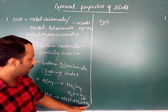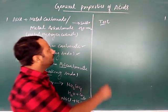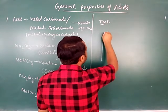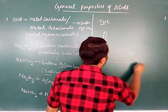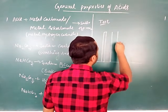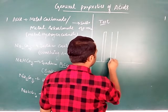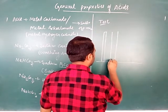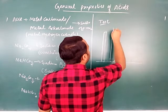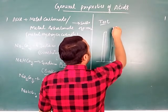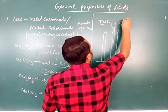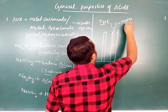To test for carbon dioxide, in the lab we use a test tube with a rubber stopper. We use a thistle funnel — spelled T-H-I-S-T-L-E — a thistle funnel, for adding acid into the apparatus.